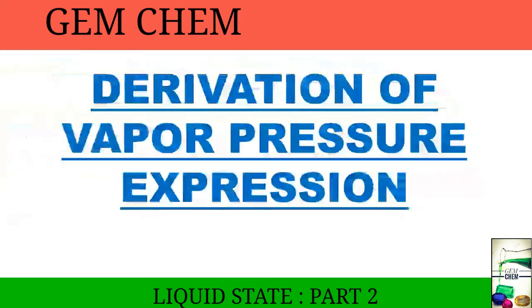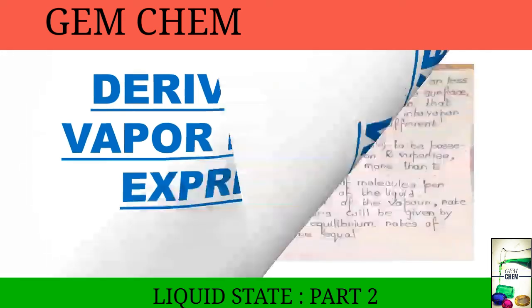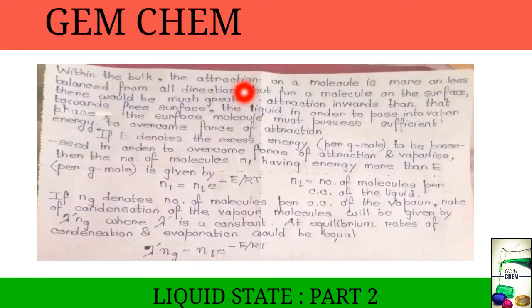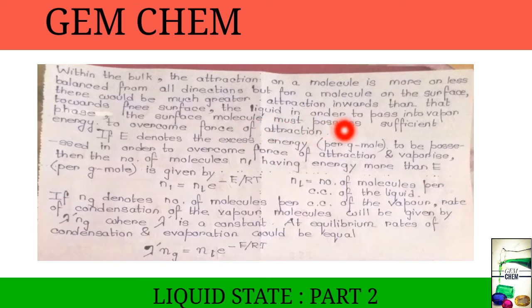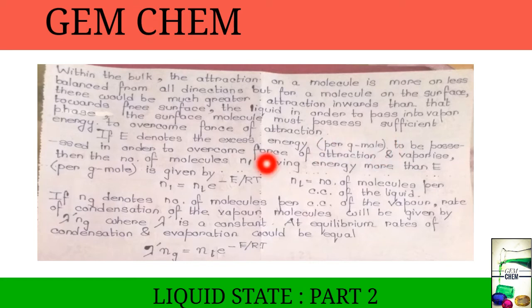Now let us derive an expression for the vapor pressure of the liquid. Within the bulk, attraction on a molecule is balanced from all directions, but for a surface molecule there is much greater attraction inwards than towards the free surface. To pass into the vapor phase, the surface molecule must possess sufficient energy to overcome the force of attraction. We consider E to be the excess energy per gram mole required to overcome the force of attraction and vaporize.